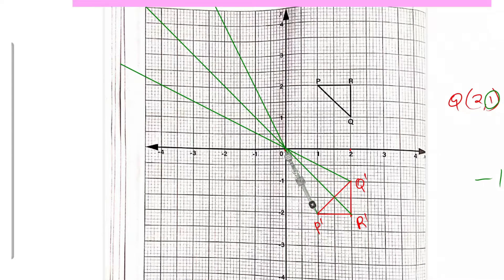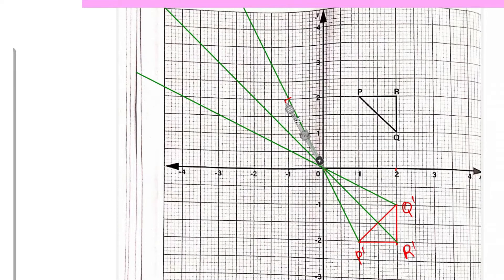For a scale factor of -1.5, take the distance from P' to the center of enlargement, then from the center mark that full distance (that would be enlargement by 1). For 1.5, you also take half of that distance and add it on — one and a half times the original distance from the center.